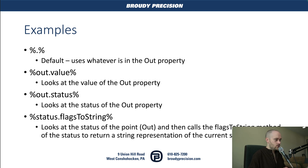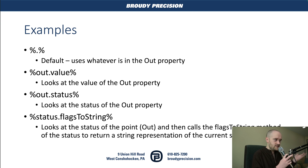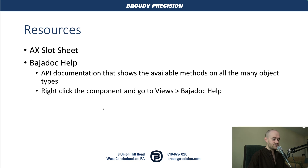Another example is out.status — same idea as out.value except now we're looking at the status instead of the value. Then there's status.flagsToString, which is quite a bit more complicated. We're looking at the status of the point and calling a flagsToString method, which is part of the status object. That method does work to convert the status to a human-readable string that looks nicer than the default out.status output.